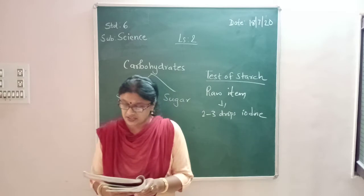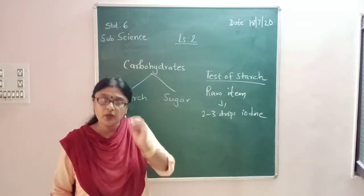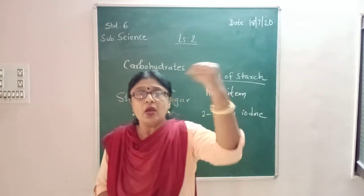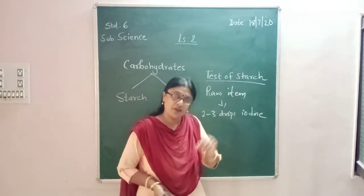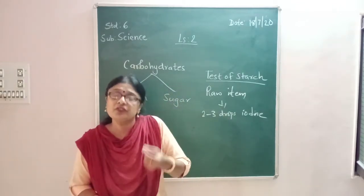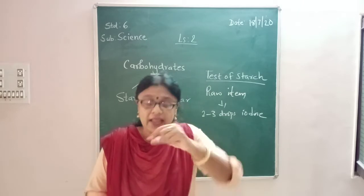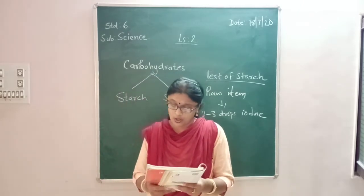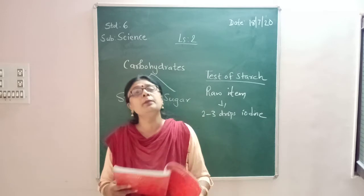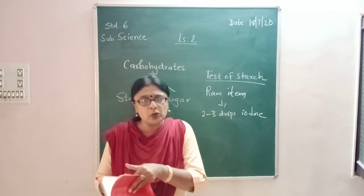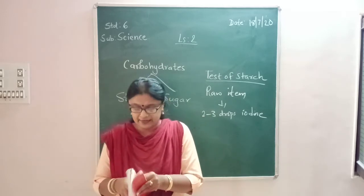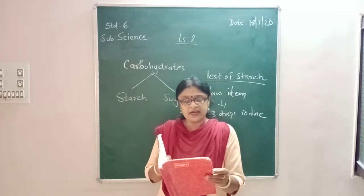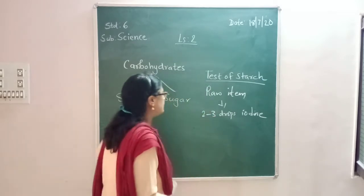Observe if there is any change in the color of the food item. Whatever item we are taking, when we put two or three drops of iodine solution, we have to see whether that food item has changed its color or not. Did it turn blue or black? A blue-black color indicates that it contains starch.